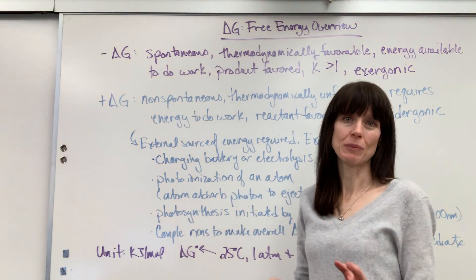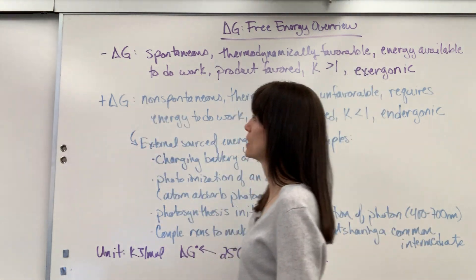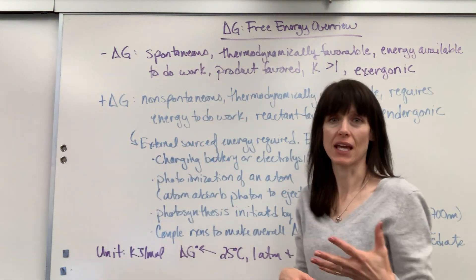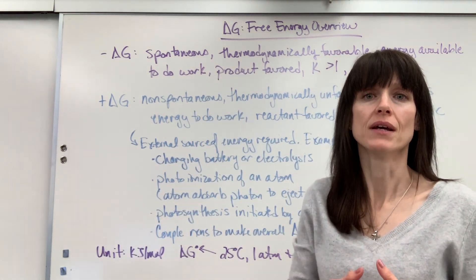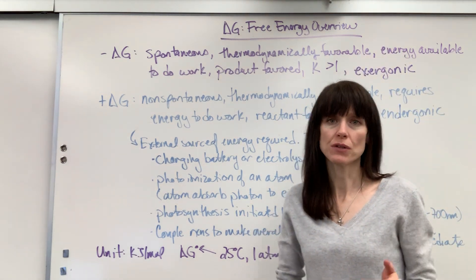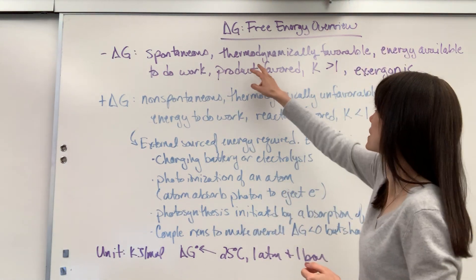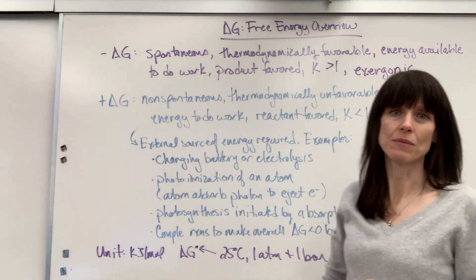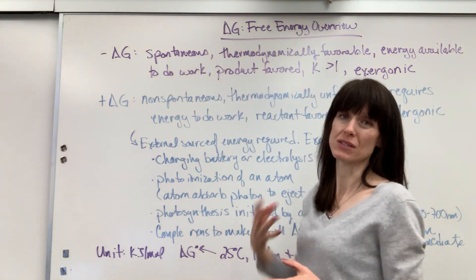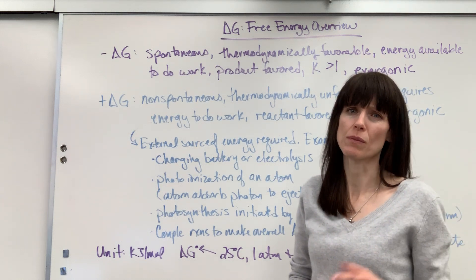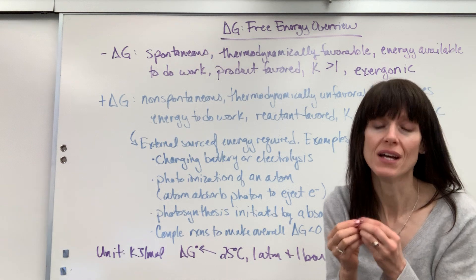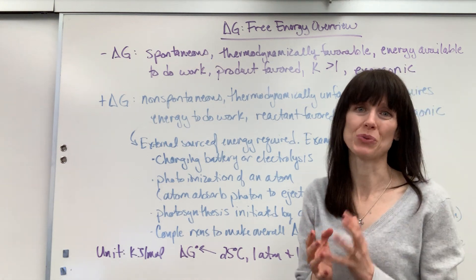Here we have really two basic things: negative delta G and positive delta G. Negative delta G indicates whenever you have a negative value on Gibbs free energy, it means it's spontaneous. Another term for this is thermodynamically favorable — those are the same thing. This is an older term; AP has now moved to thermodynamically favorable, and you're seeing some textbooks move to that term. Here's the heart of it: energy is available to do work.